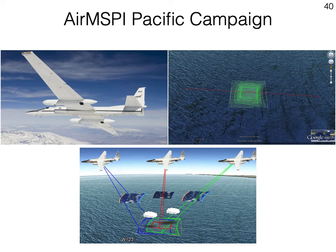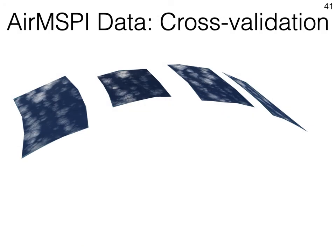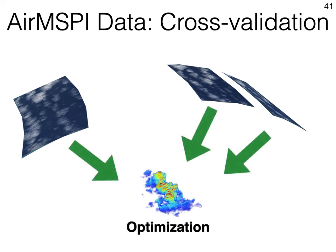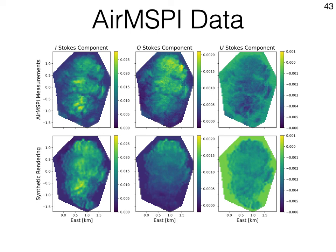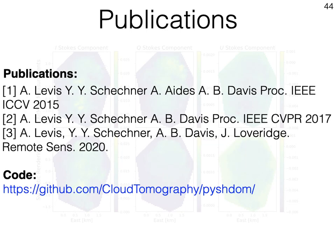Finally, we also demonstrate our approach on real AirMISP data from a Pacific campaign. Here, we don't have access to ground truth. However, we assess our recovery using cross-validation. Leaving out one view angle from the optimization, we recover the 3D cloud properties. Now using the recovered synthetic cloud, we can render the left out image and compare it to the acquired image. In the top row here, we show the acquired Stokes components. And in the bottom row, we show the simulated view of the synthetic cloud recovered. For more details, I encourage you to look into our 2020 Remote Sensing paper and the SPIE conference publication. Furthermore, we have an open source code which you are more than welcome to explore. You can find it at the link below.